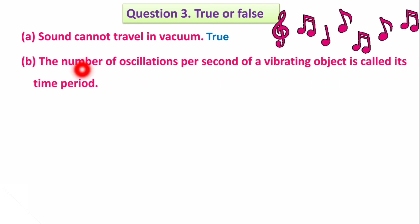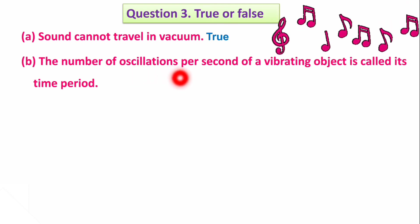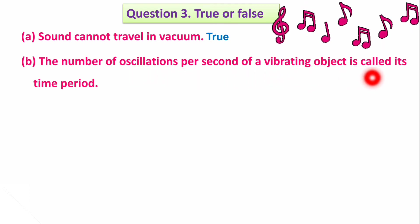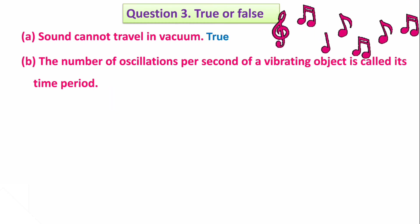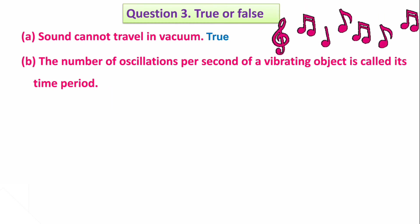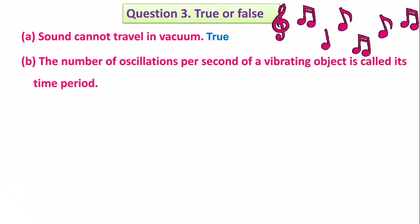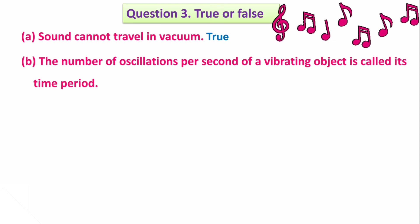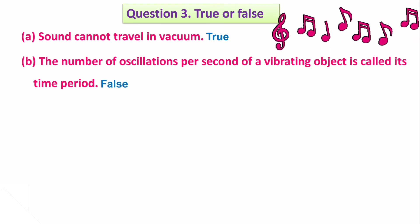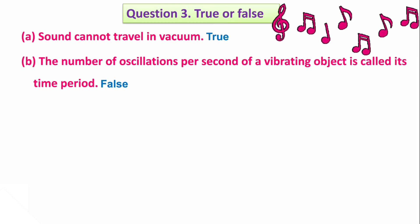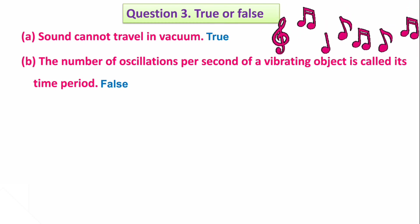Next is a True or False question: The number of oscillations per second of a vibrating object is called its time period. Is it true or false? It is false, because the number of oscillations per second is actually called frequency, not time period.